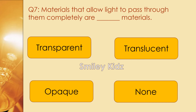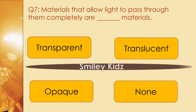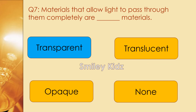Question number 7. Materials that allow light to pass through them completely are dash materials. Options are transparent, translucent, opaque, and none. The right answer is transparent materials.